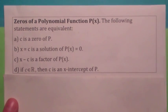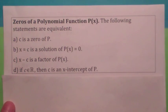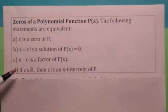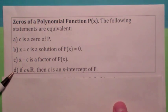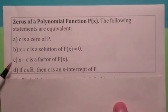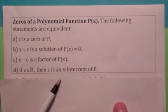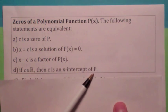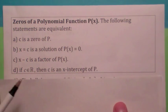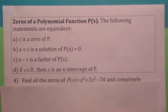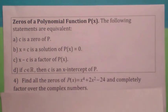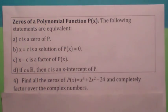Here we go, revisiting the properties of polynomial zeros. Notice, part d is the important one. It's only if the zero is a real number will it be an x-intercept of the graph of p of x.